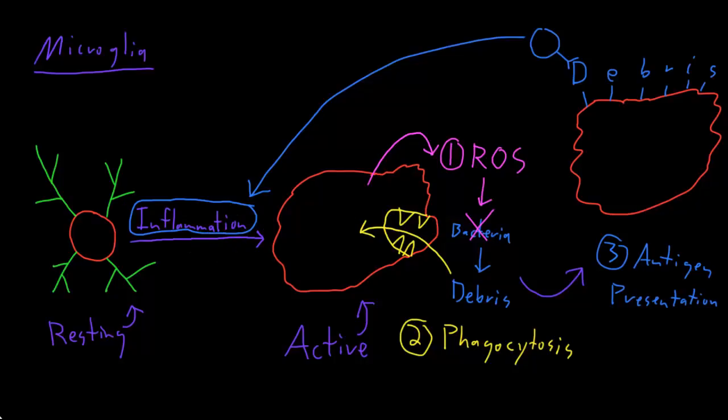In addition to these functions, microglia appear to influence neurons, other glia, and other cells of the immune system and vice versa through exchange of a variety of substances.